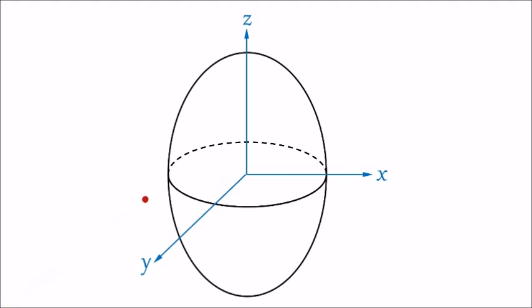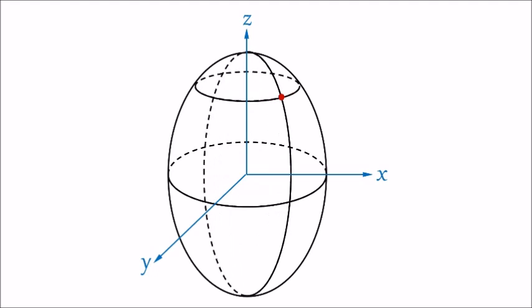This red dot would be the position point under our study. This pink line represents the radius, which is the distance of the point from the origin. Phi is the polar angle or zenith angle with respect to the positive side of the Z axis. Theta is the azimuthal angle, shown in green color, in the X-Y plane and with respect to the Y axis.